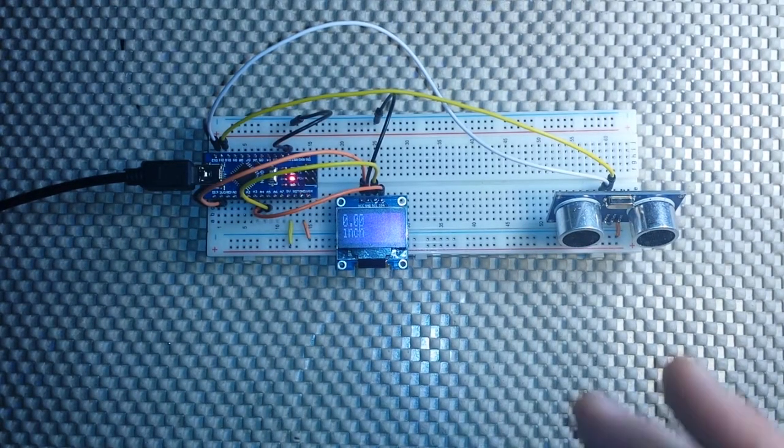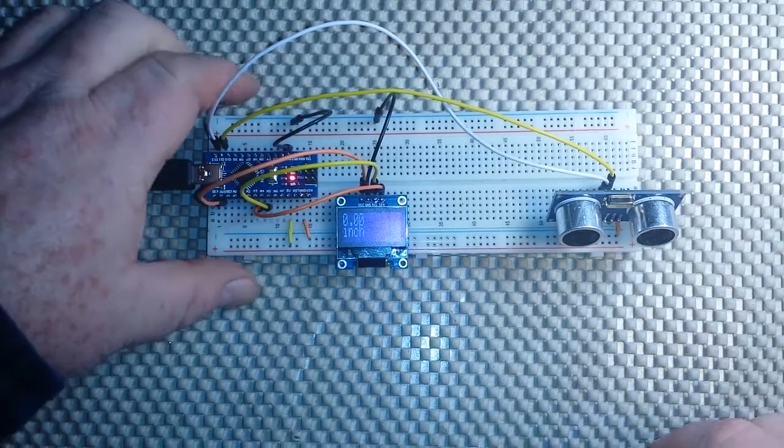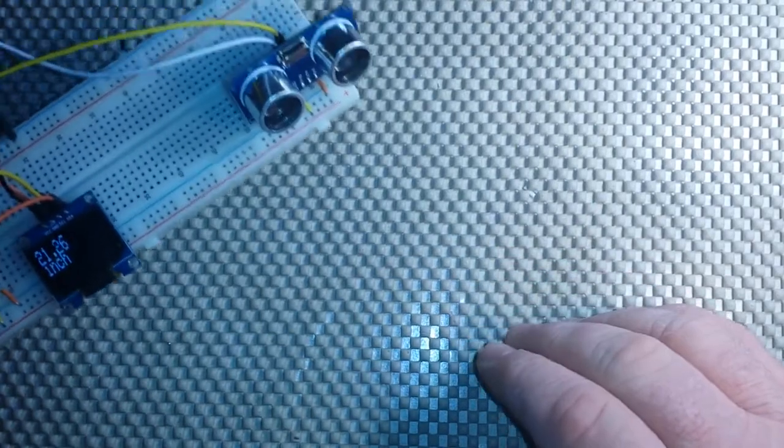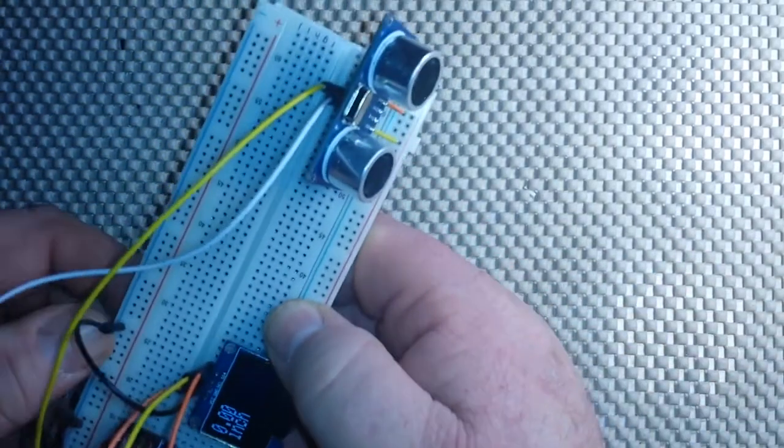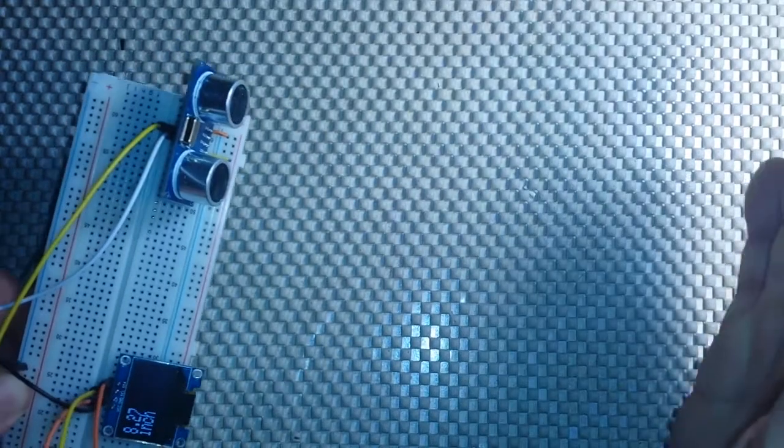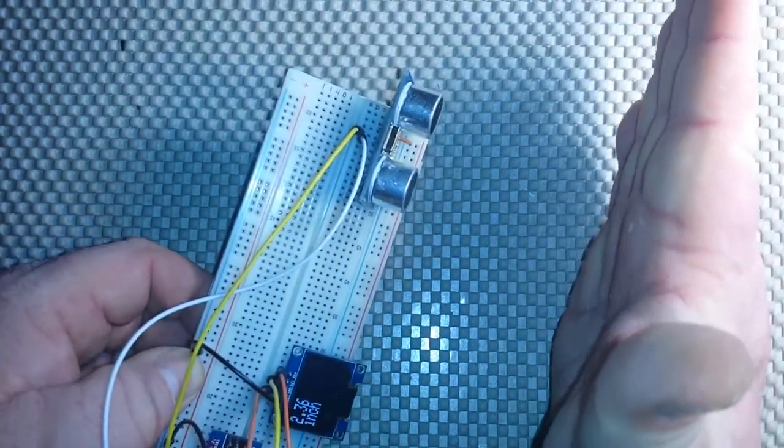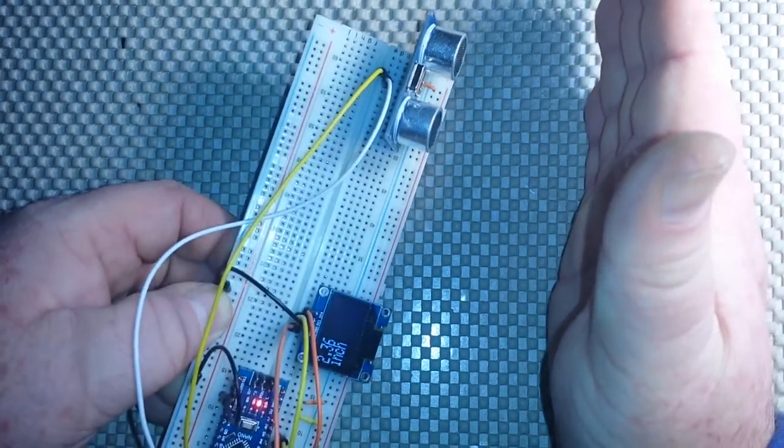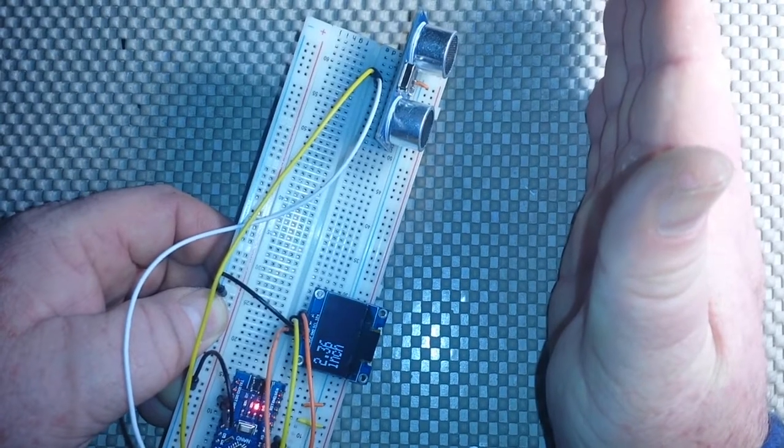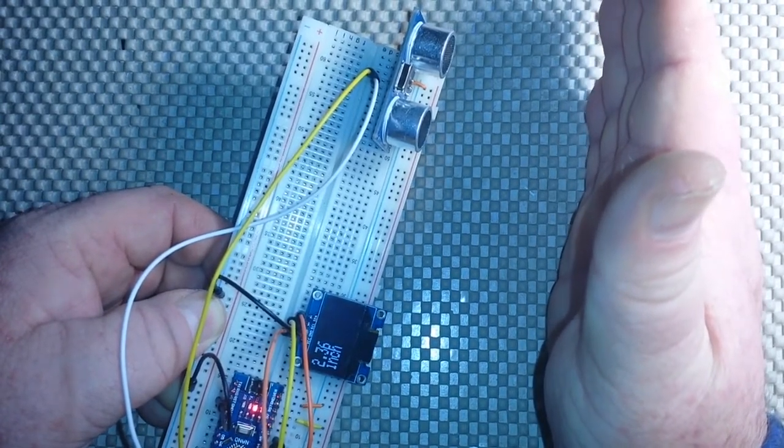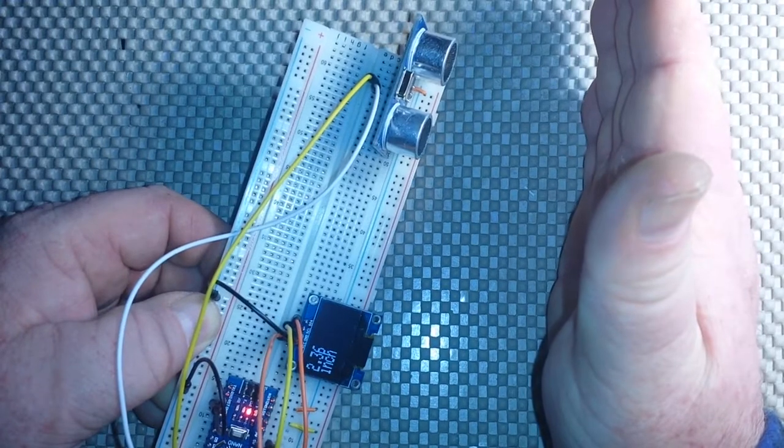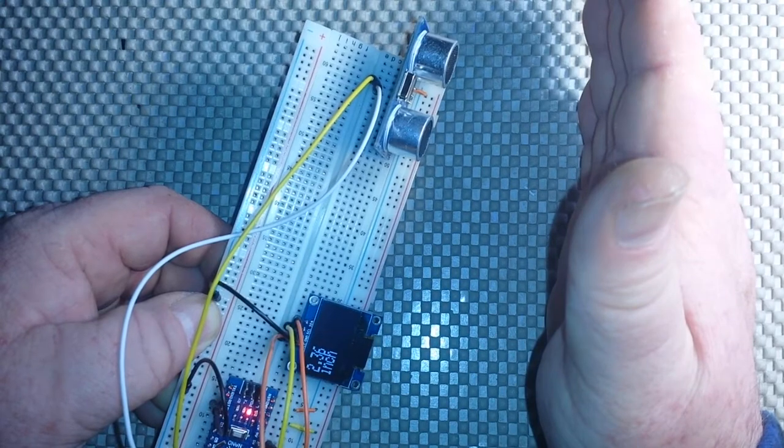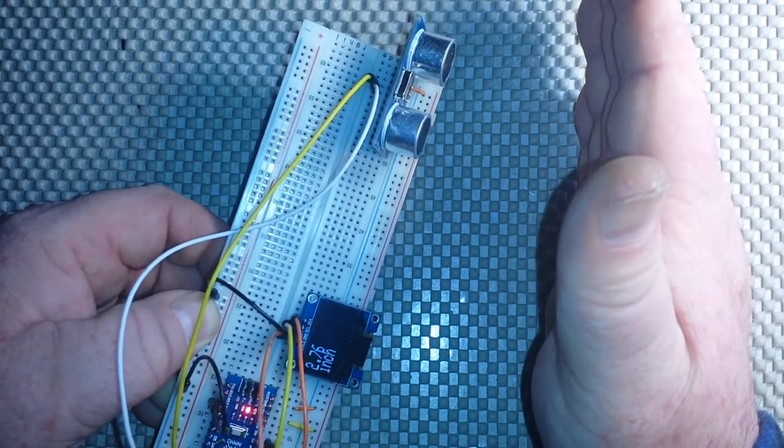So, what we can do with this is mount this sensor to the front of the robot car. And as it comes in and notices a wall, for instance, now if you can see the screen there, that says 1.97 inches. Well, now it says 2.36. So, we'll set a threshold and say when the robot gets closer than 4 inches, stop.